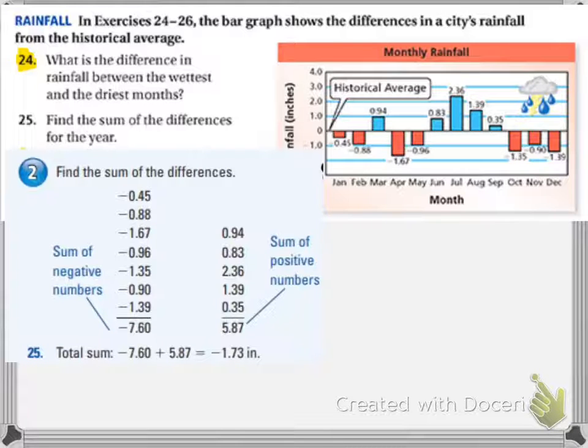So when you do number 25, they want the sum of the differences for the year, and this is a lot of numbers. So what they suggest in the book is that you take all the negative numbers and you put those together, you add them all together, and then you take all the positive numbers and you add all of those together. And then once you get the sum of all the negative numbers and the sum of all the positive numbers, you add those two sums together, and your answer is negative 1.73.